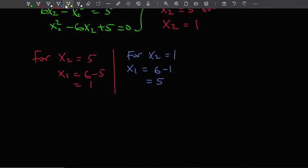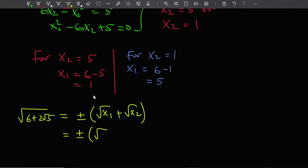We just use this again. So the square root of 6 plus 2 root 5—we say this is plus or minus the square root of x1 plus the square root of x2. So when x1 is 1, x2 is 5.